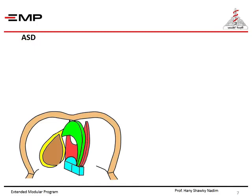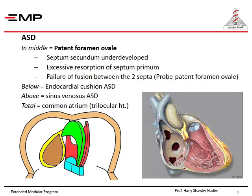To understand the causes of atrial septal defects (ASD), we revise the four sources of the inter-atrial septum: number one, septum intermedium; number two, septum primum; number three, septum secundum; number four, right venous valve and septum spurium. There are four types of ASD — in the middle of the inter-atrial septum, in the lower part, in the upper part, or total absence of the inter-atrial septum.